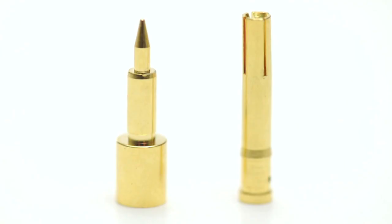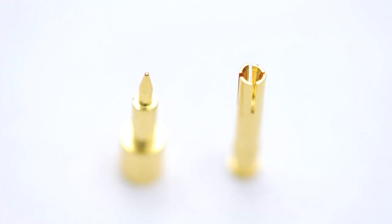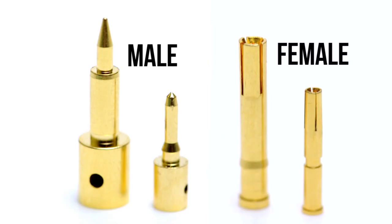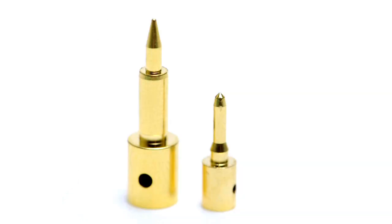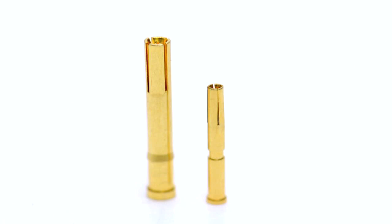The second property we need to identify is the polarity of the connector. Polarity is determined by the presence of a male pin on the connector. Most coax connectors come with a separate pin that is attached to the center conductor. A male pin is completely solid while a female pin is hollow.